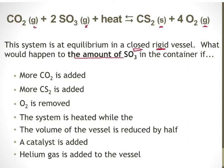We want to know what happens to the amount of SO₃, which is on the left side of the equation. A reverse shift will create more SO₃; a forward shift will use it up. Notice that the word 'heat' is written on the left-hand side, making this an endothermic reaction — the forward reaction absorbs heat and the reverse reaction would be exothermic.